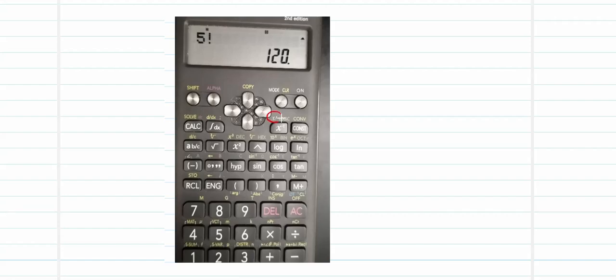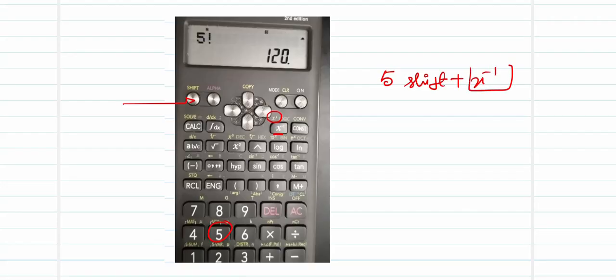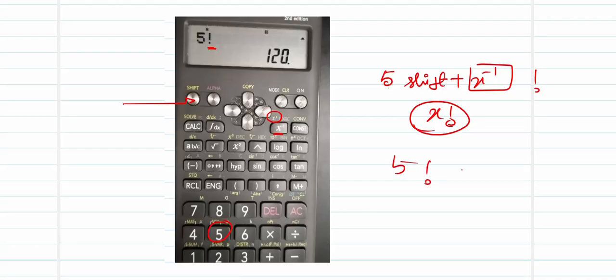Moving on to the third operation — factorial. This is quite simple. The operator is on top of the x-inverse button. To compute 5 factorial, first press 5, which will appear on your screen. Then press Shift, then press the x-inverse button. The factorial symbol will appear on your screen. Press equal-to and the answer — 120 — will be displayed. For any number, press it, then Shift plus x-inverse to generate the factorial symbol, then press equal-to for the answer.